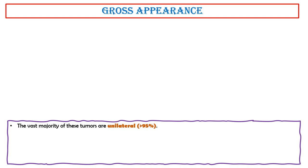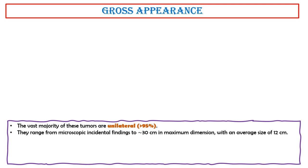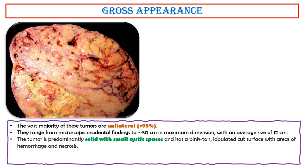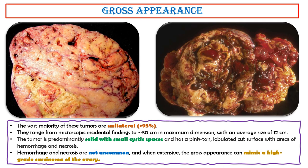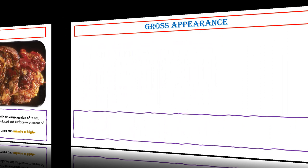Gross appearance. The vast majority of these tumors are unilateral, more than 95%. They range from microscopic incidental findings to approximately 30 cm in maximum dimension, with an average size of 12 cm. The tumor is predominantly solid with small cystic spaces and has a pink tan-lobulated cut surface, with areas of hemorrhage and necrosis. When extensive, the gross appearance can mimic a high-grade carcinoma of the ovary.